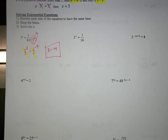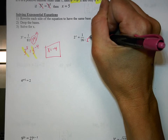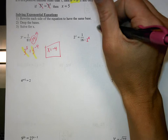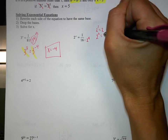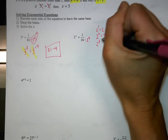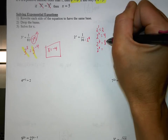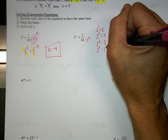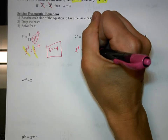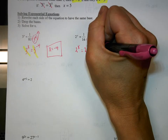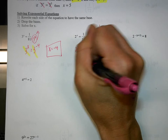So 16 is 2 to what power? It's actually the 4th. If you need to, write it on the side: 2 to the 1st is 2, 2 to the 2nd is 4, 2 to the 3rd is 8, and 2 to the 4th is 16. But in order to bring that up, it needs to turn into a negative. So the answer is negative 4.